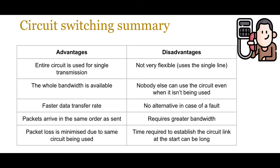On screen you see a summary of the advantages and disadvantages of a circuit switching network — pause the video and jot these down. Advantages include that the entire bandwidth is available for your single transmission giving a faster data transfer rate, and packets arrive in the same order as sent with minimal packet loss. Disadvantages include inflexibility — nobody else can use the circuit even when you're not using it — no alternative in case of fault, greater bandwidth requirement, and longer setup time as both parties need to agree on which circuit to use.